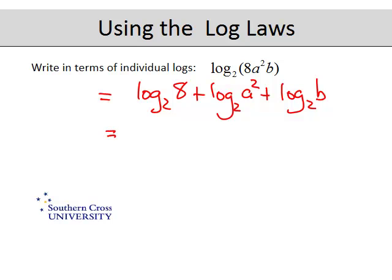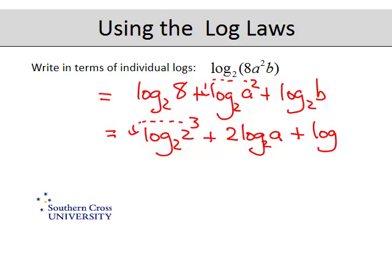Now, looking at that, this log of 8 base 2 can be tidied up because we know that 8 is 2 cubed. And then the next step is to put that 3 down in front. On the second one, this 2 can come down in front using the power rule. So it's going to be 2 log a base 2, plus log b base 2.